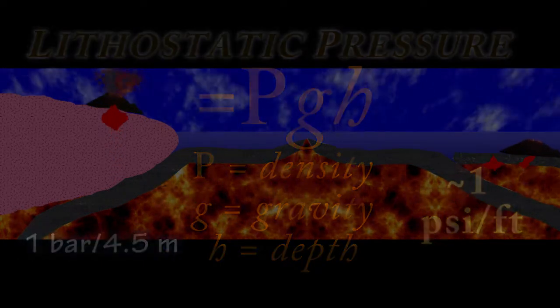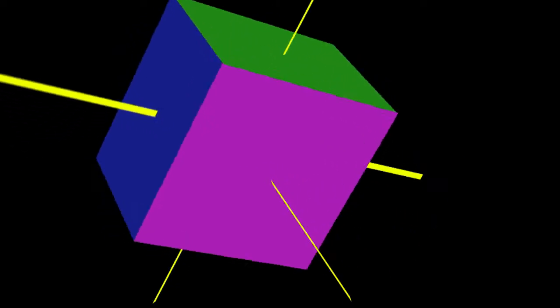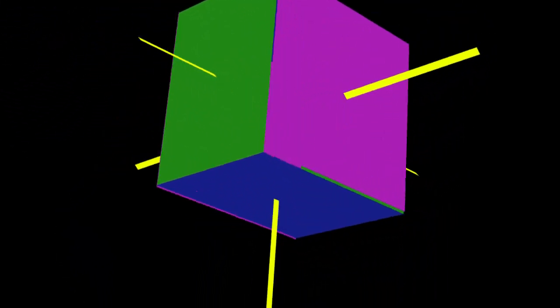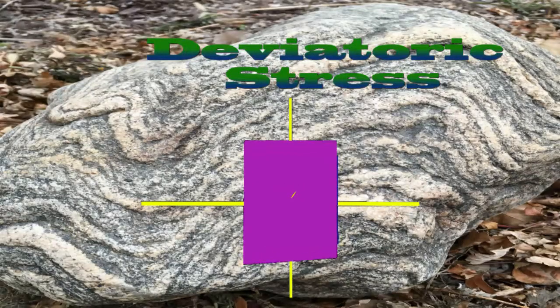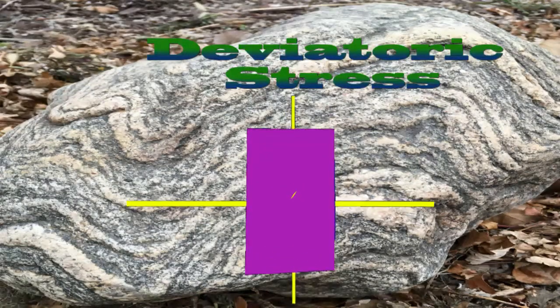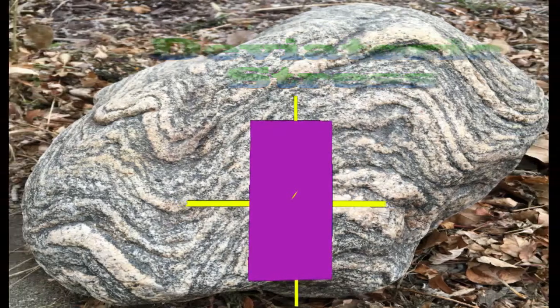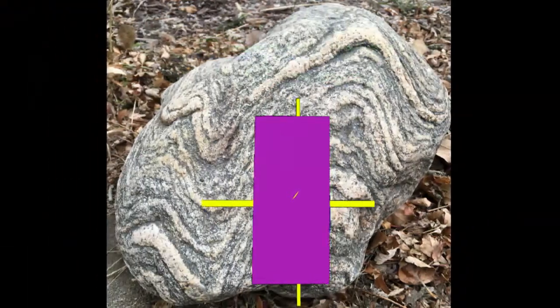We call this pressure the lithostatic pressure on the rock, which acts equally on all faces of the rock volume. This was a reasonable assumption as deviatoric stress can't build up very much before the rock yields and deforms, thus equalizing the stress differences.